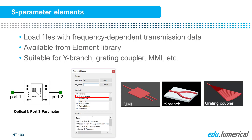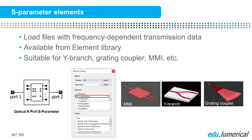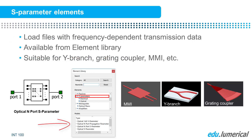S-parameter elements allow you to load data describing the frequency-dependent complex transmission for all input and output port combinations and polarizations. S-parameter elements are primitive elements, meaning that they are provided in the element library. You can find these elements under the S-Parameters folder of the element library.